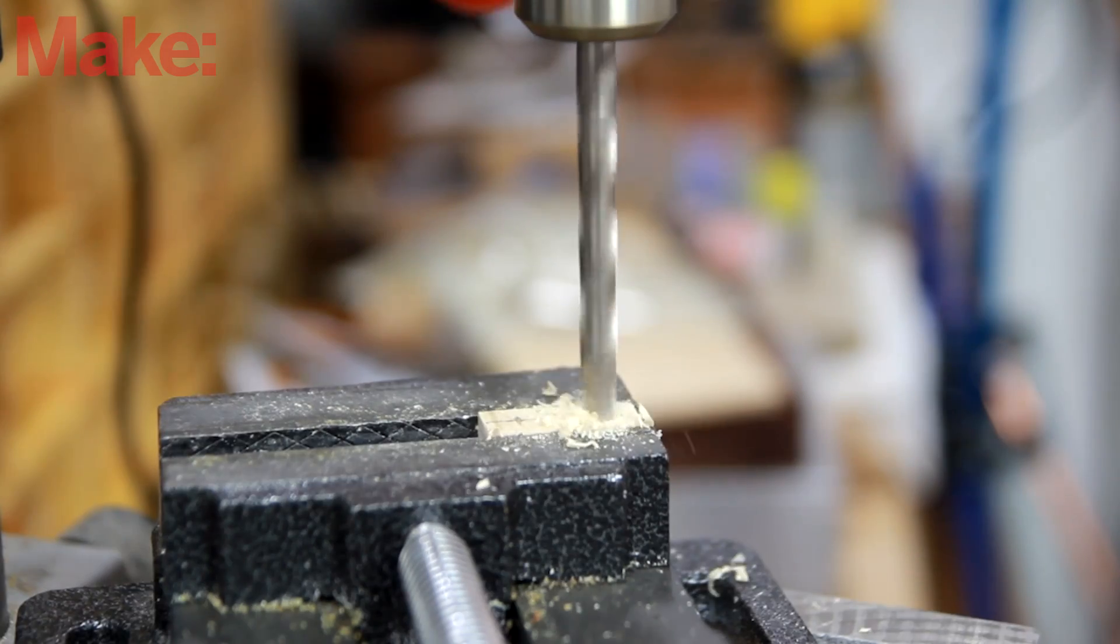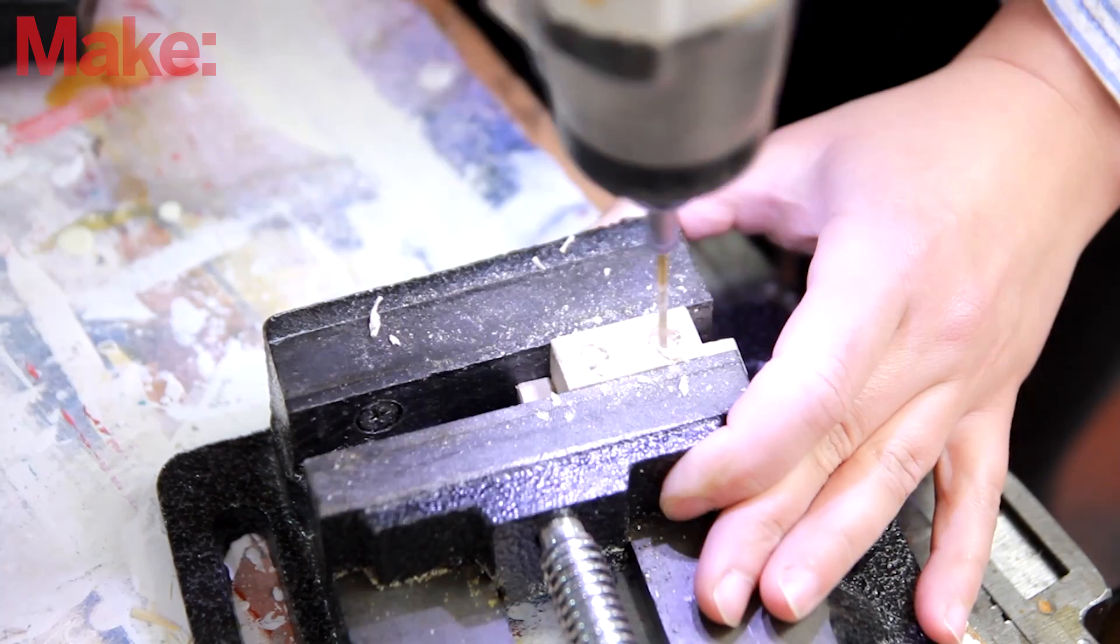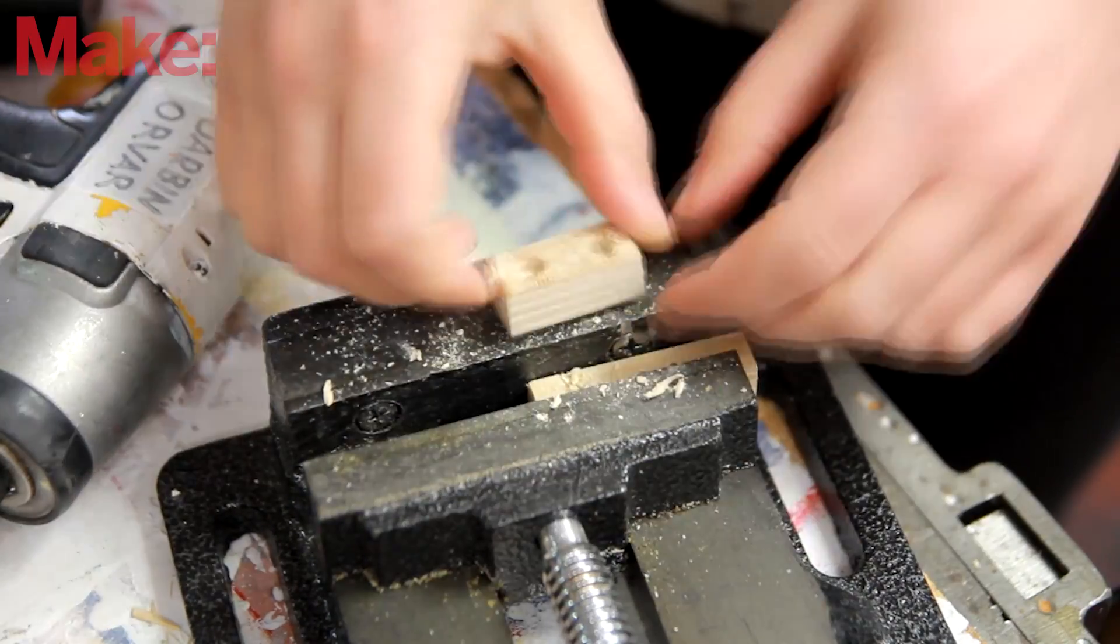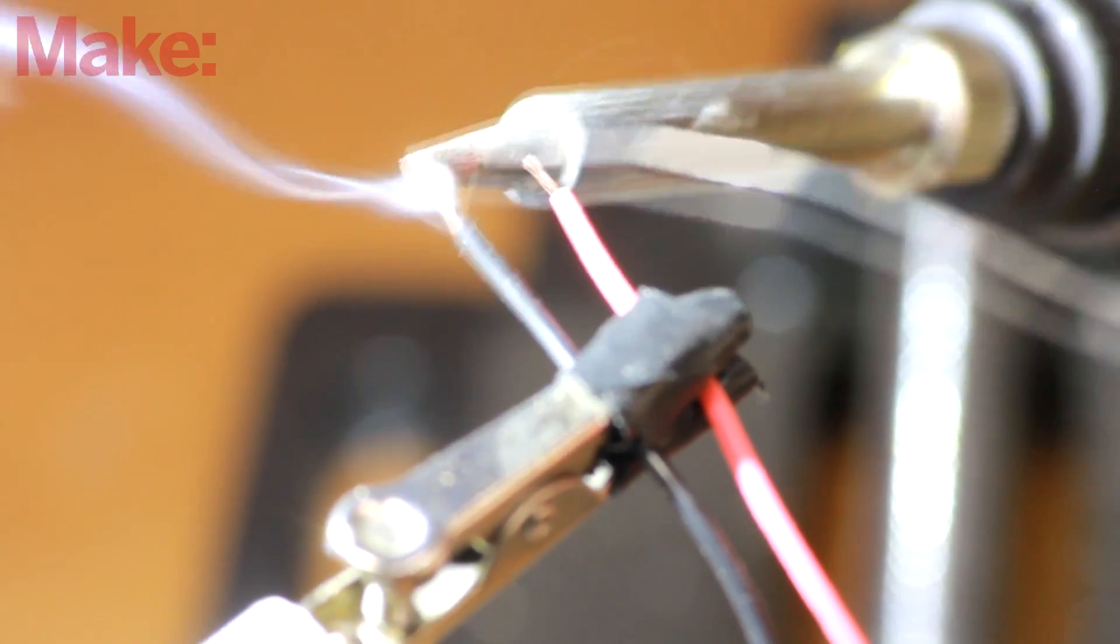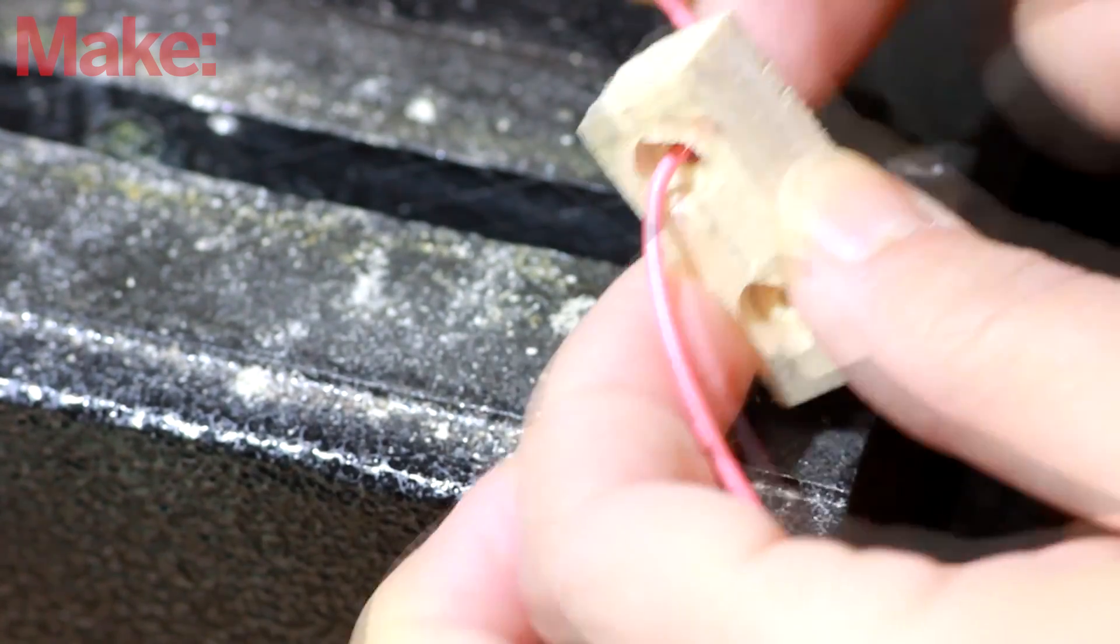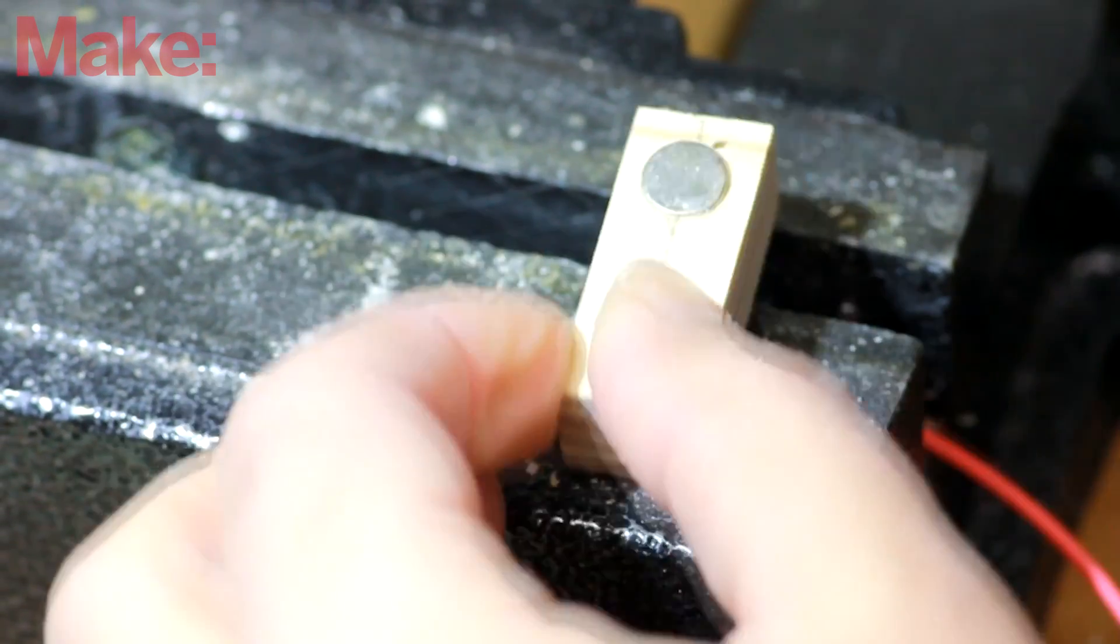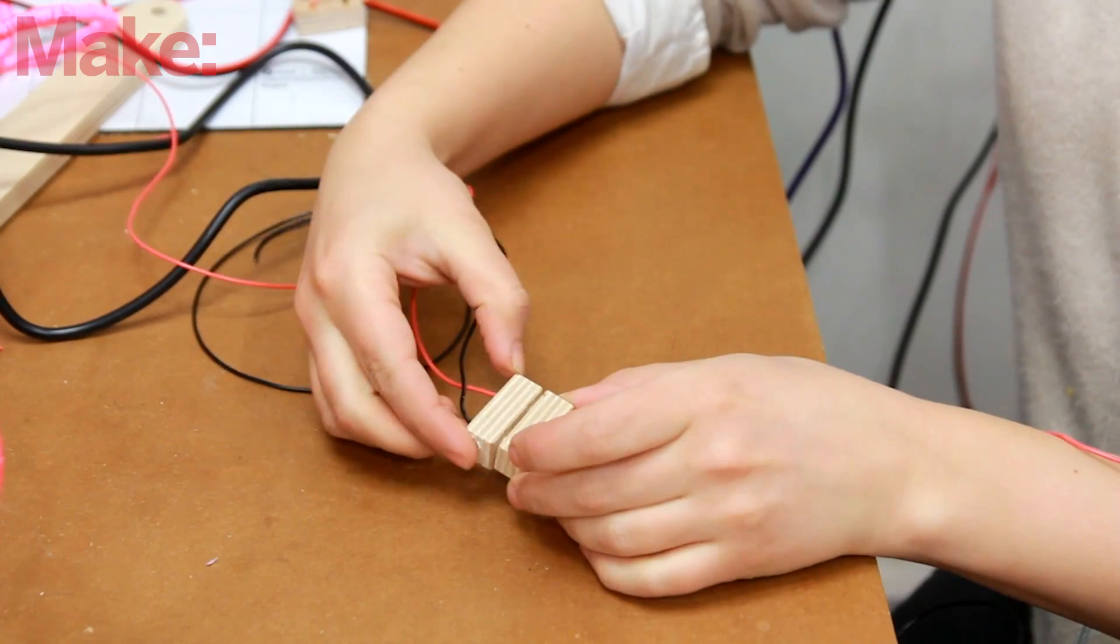I started with drilling some holes in a small piece of wood, first a shallow hole, and then a smaller hole all the way through. Then I pre-tinned some wires and soldered them to the magnets. Then I threaded the wire through the wood and gently tapped the magnet in place. And then repeated, and here you can see the two coming together.